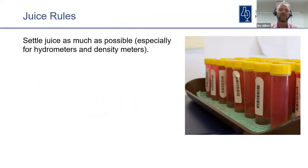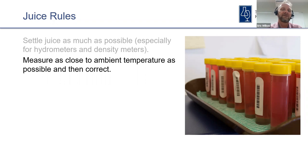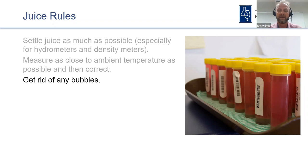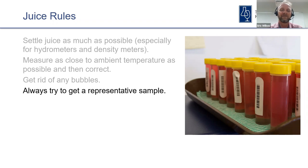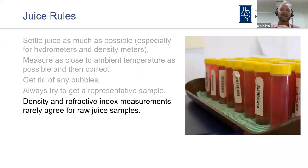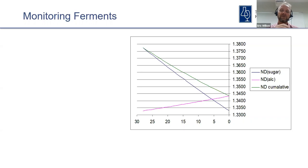Key rules for juice measurement: settle juices as much as possible, especially for hydrometers and density meters; measure as close to ambient temperature as possible and then correct; get rid of any bubbles; always try to get a representative sample. Keep in mind that density and refractive index measurements rarely agree for juice samples, mostly because of the solids involved.